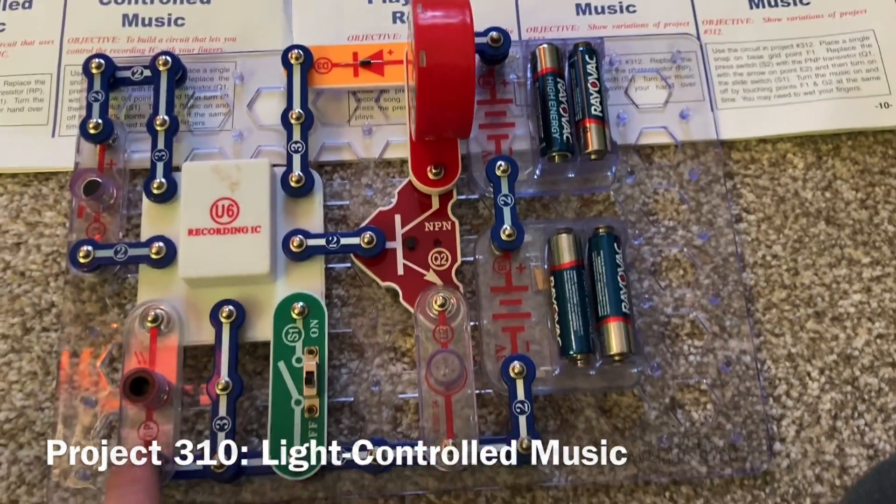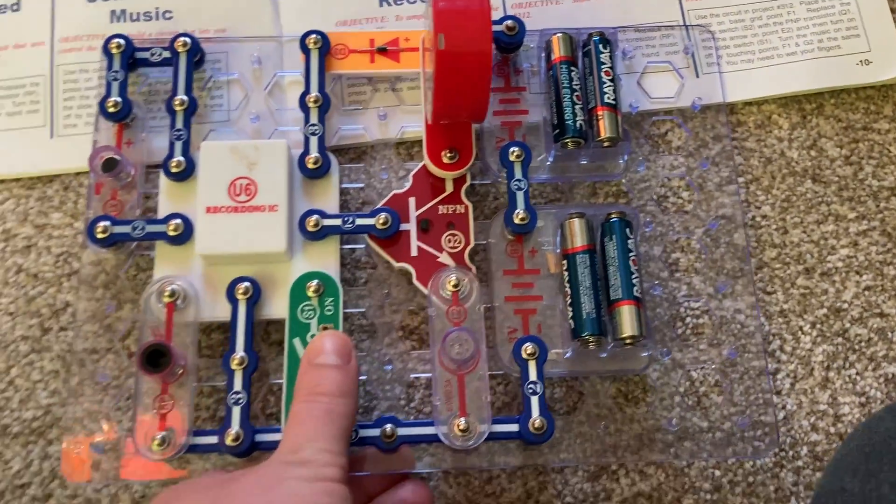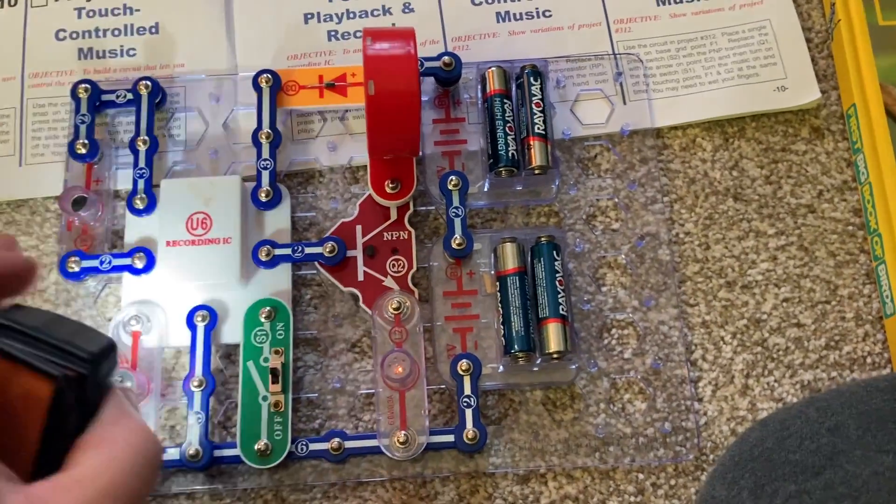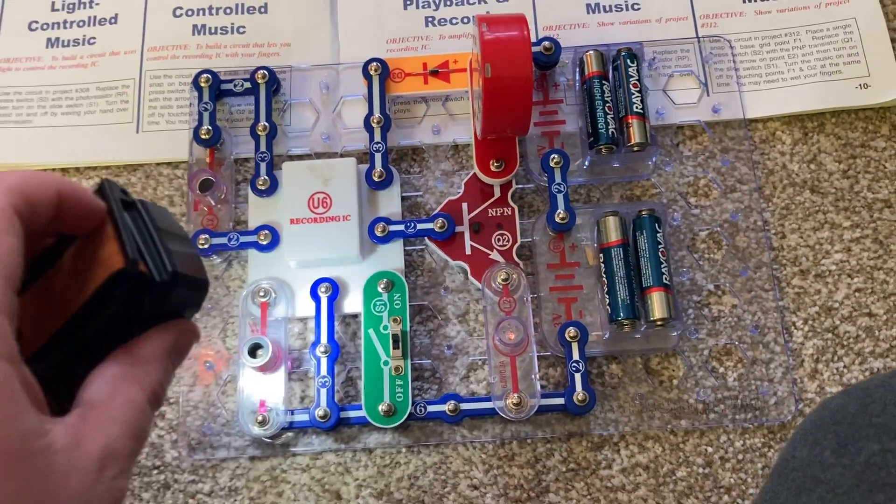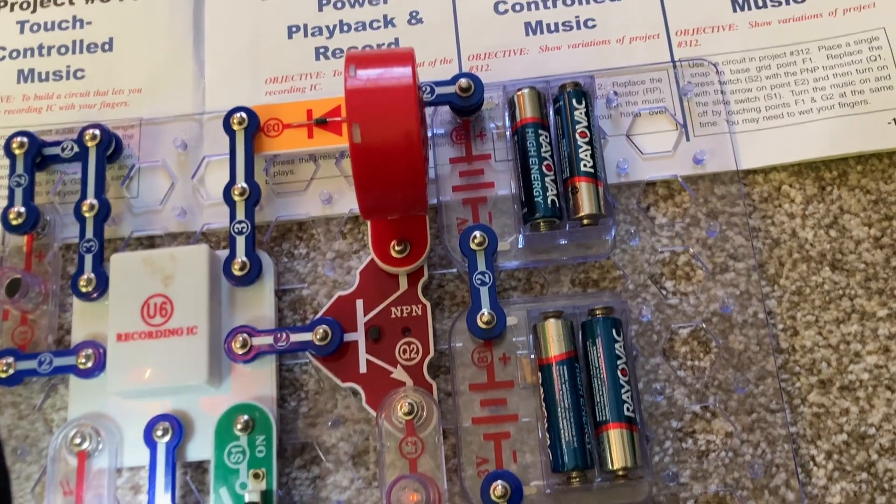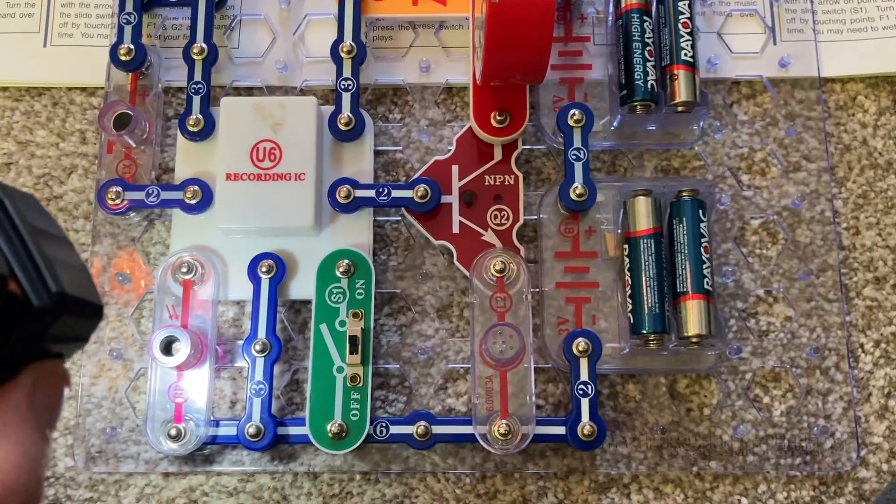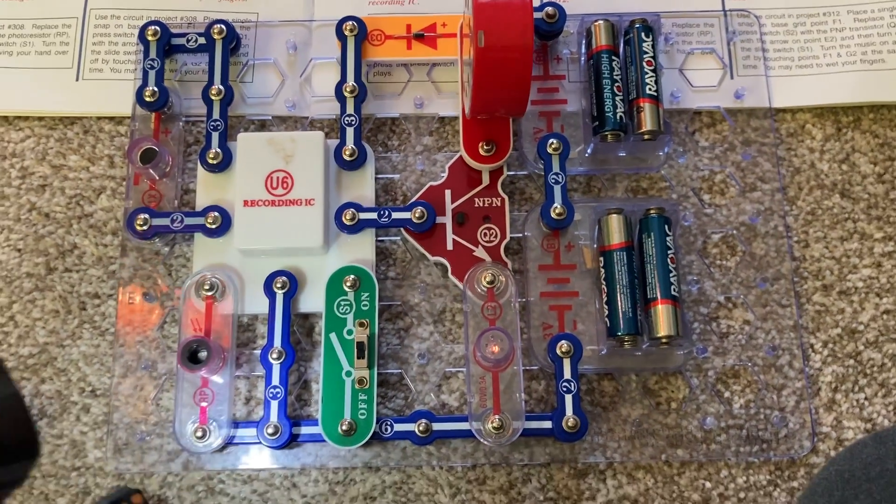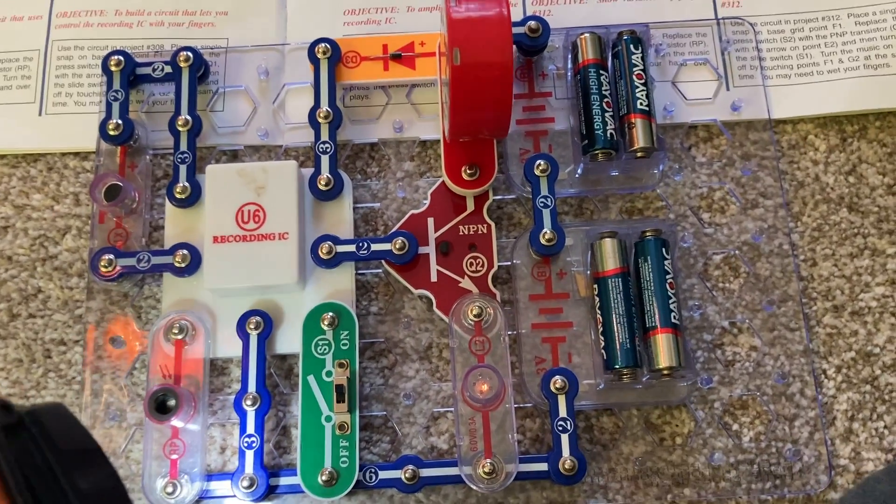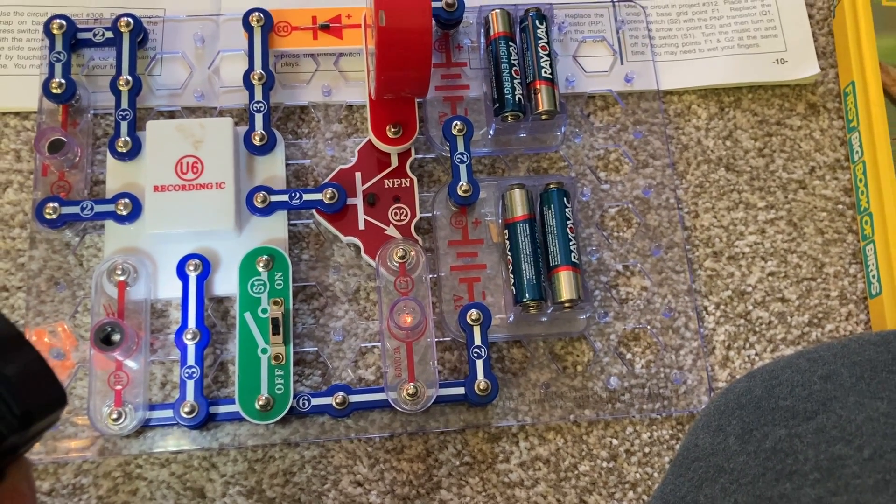I replaced the press switch with the photoresistor. And when I turn on the slide switch, I can turn the music on and off by waving my hand over the photoresistor as light is shining on it. It will record your voice, most likely. And there you have it.